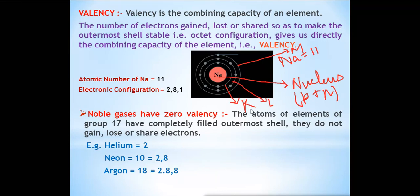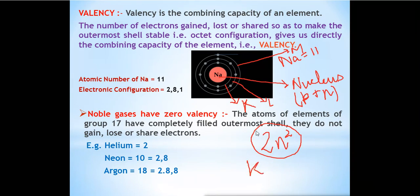Suppose we want to calculate the number of electrons in a shell. We use the formula 2n², given by scientist Niels Bohr in Bohr's atomic model. For the K shell, n equals 1, so 2 × 1² = 2, meaning only two electrons can be present in the K shell. For the L shell, n equals 2, so 2 × 2² = 8, meaning eight electrons can be present in the L shell.